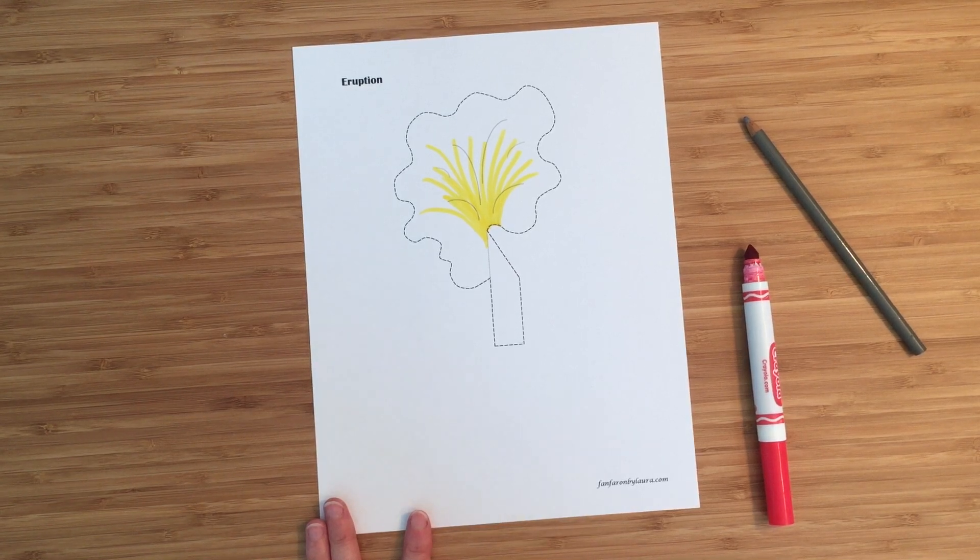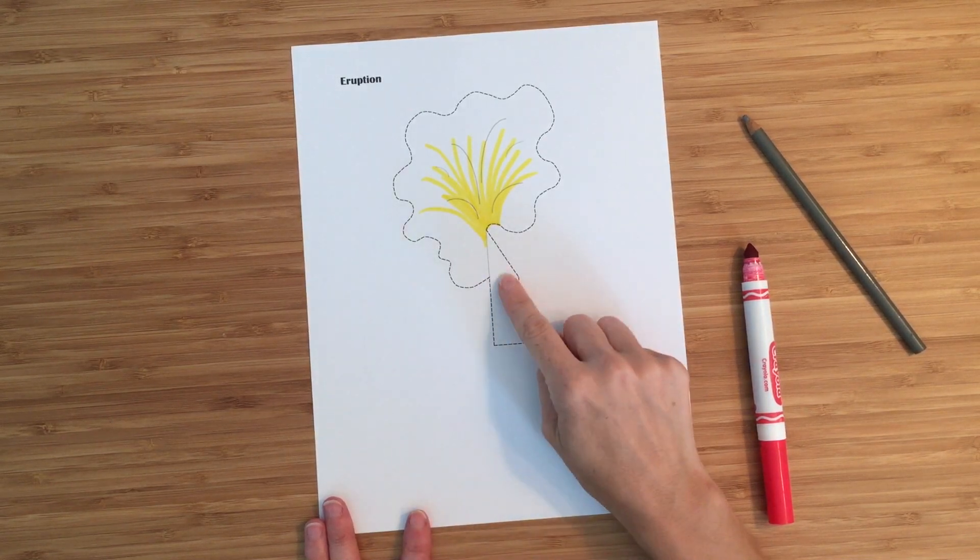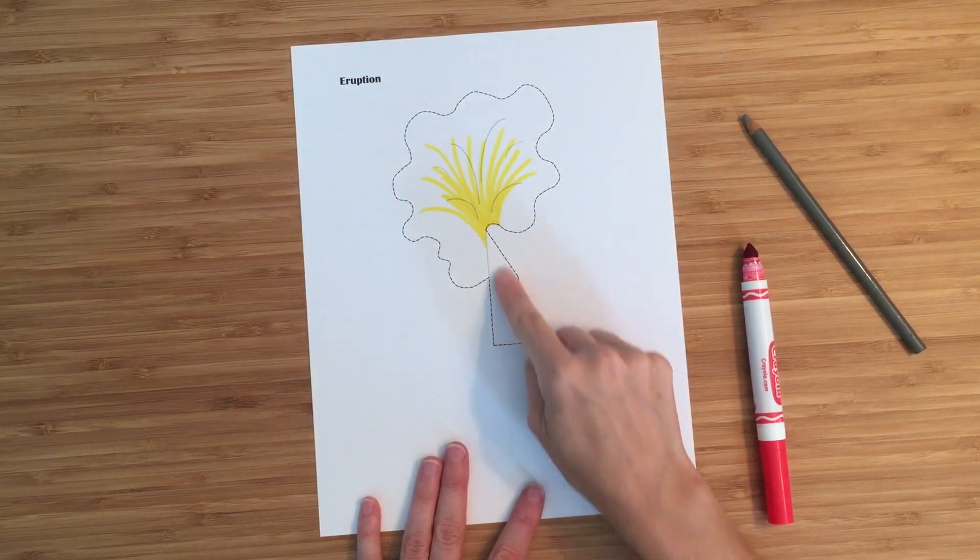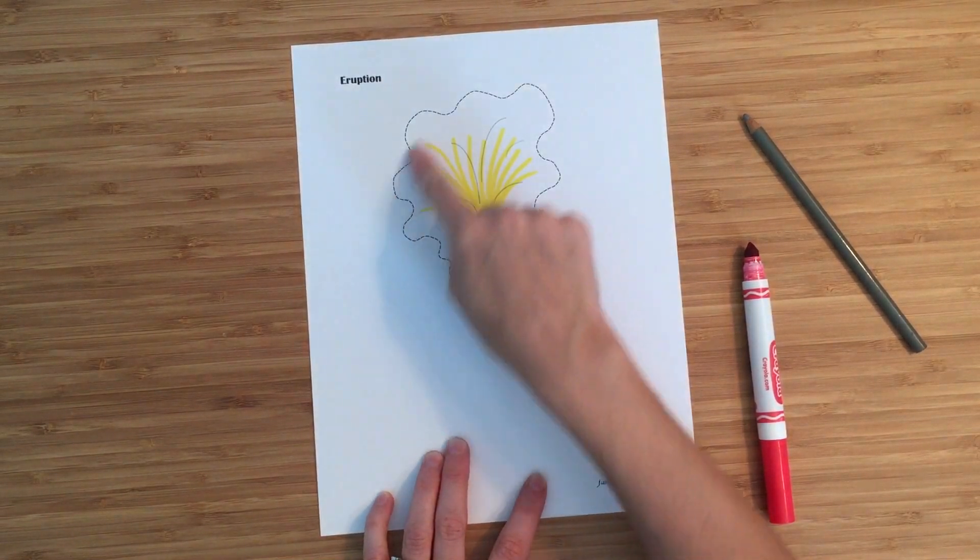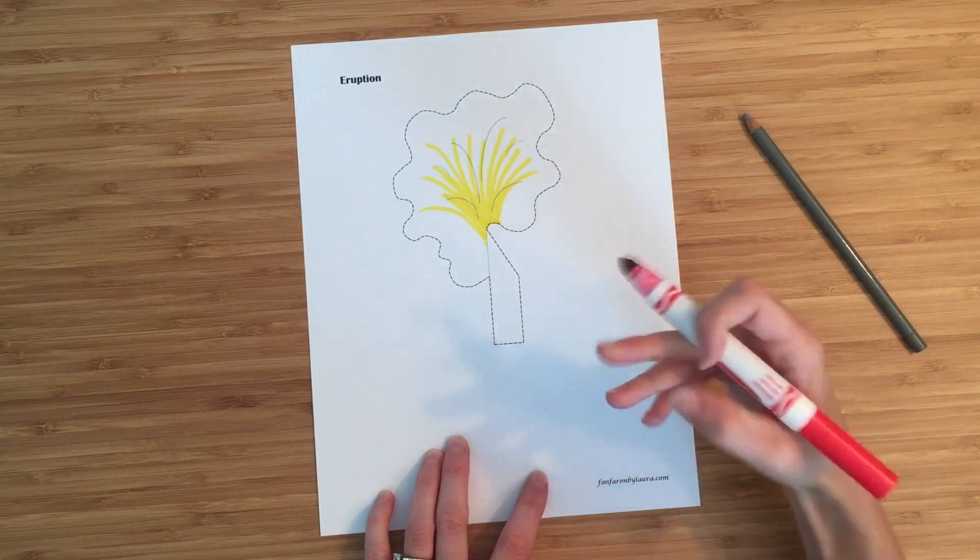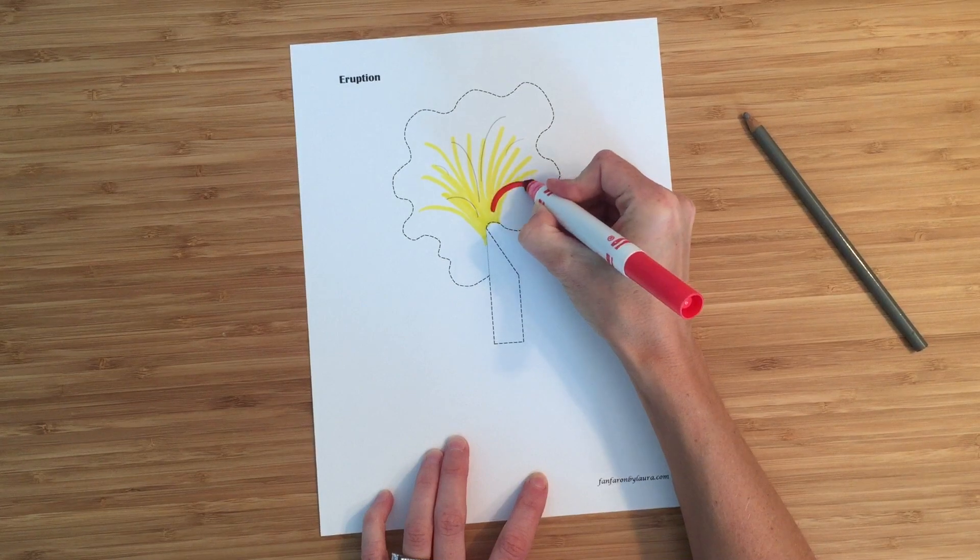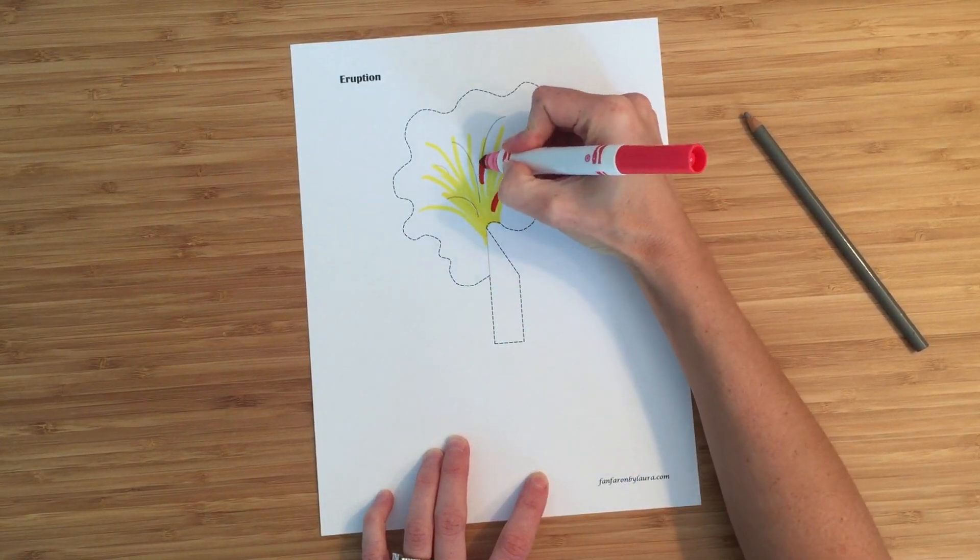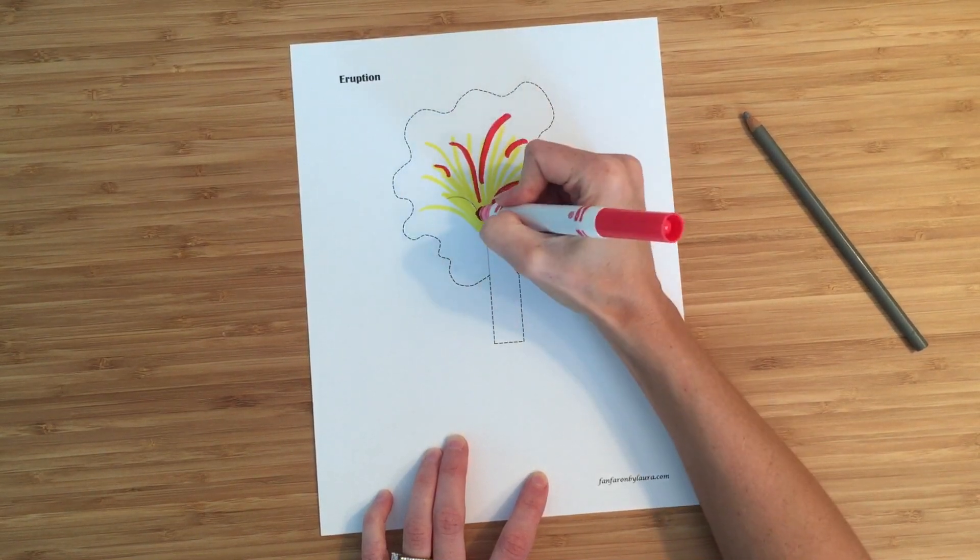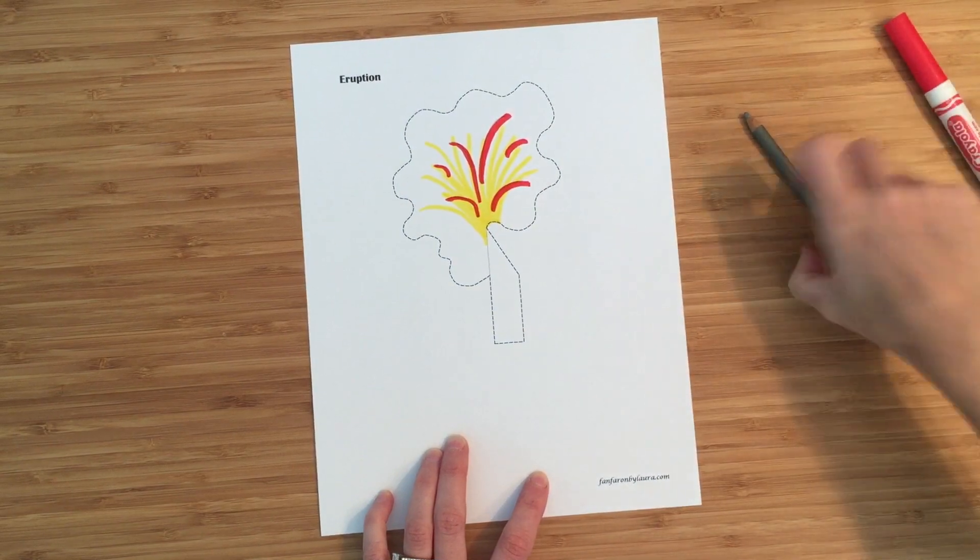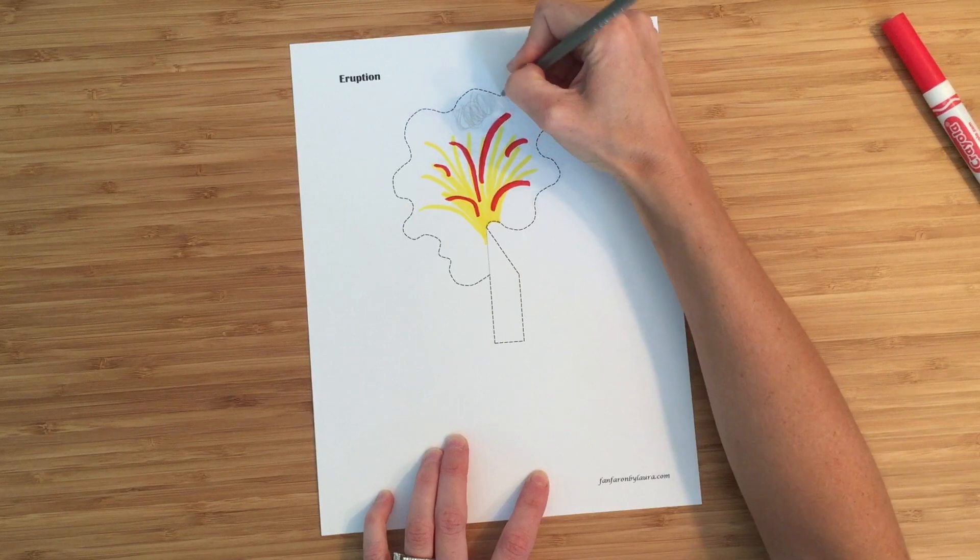The last thing you want to color is the actual magma and ash cloud just erupting out of the volcano, which is this. So you don't need to color this part because it's going to be inside the volcano. You won't see it. But this, the eruption itself, you do want to color. So I just made some yellow going every which way. And then I was going to add some red in here. And then I'm going to color the rest of it more gray. So you can see it's like the ash cloud that's just billowing out. So I'm just going to start coloring the gray every which way.